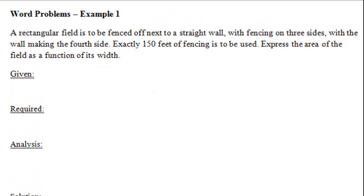A rectangular field is to be fenced off next to a straight wall, with fencing on three sides and the wall making the fourth side. Exactly 150 feet of fencing is to be used. Express the area of the field as a function of its width.